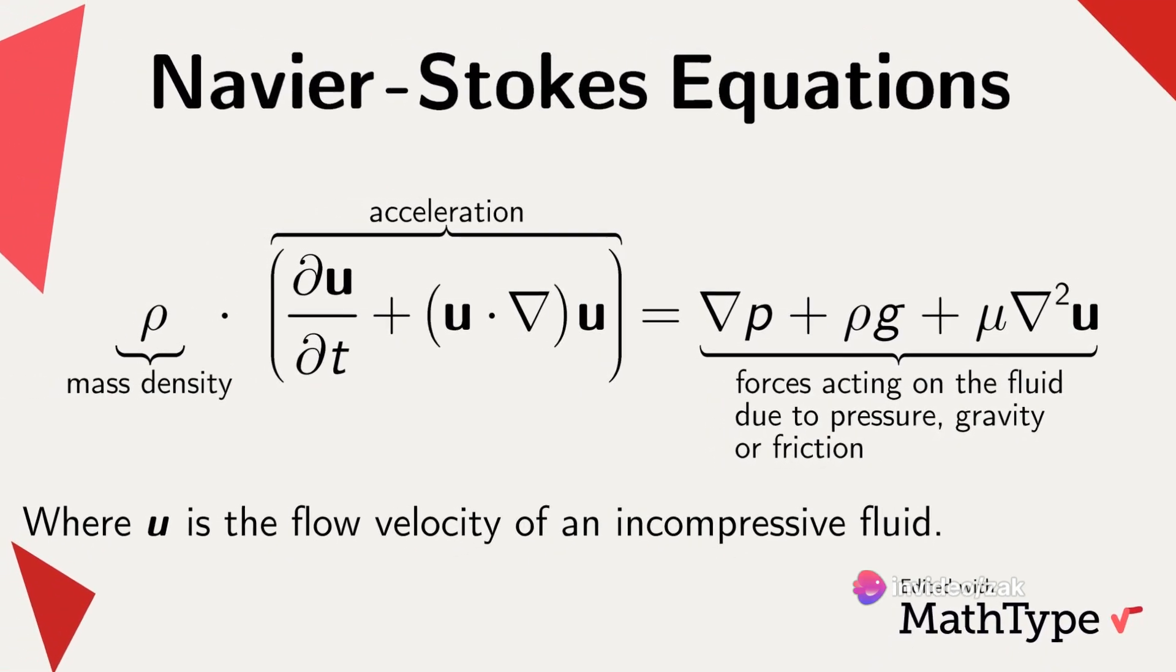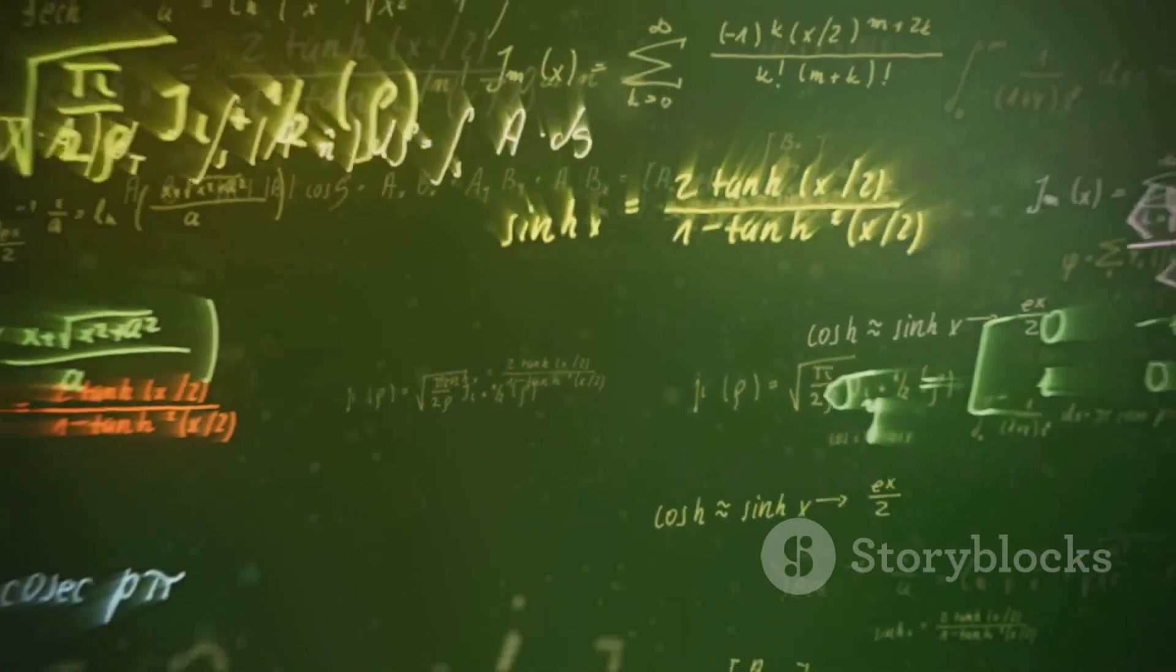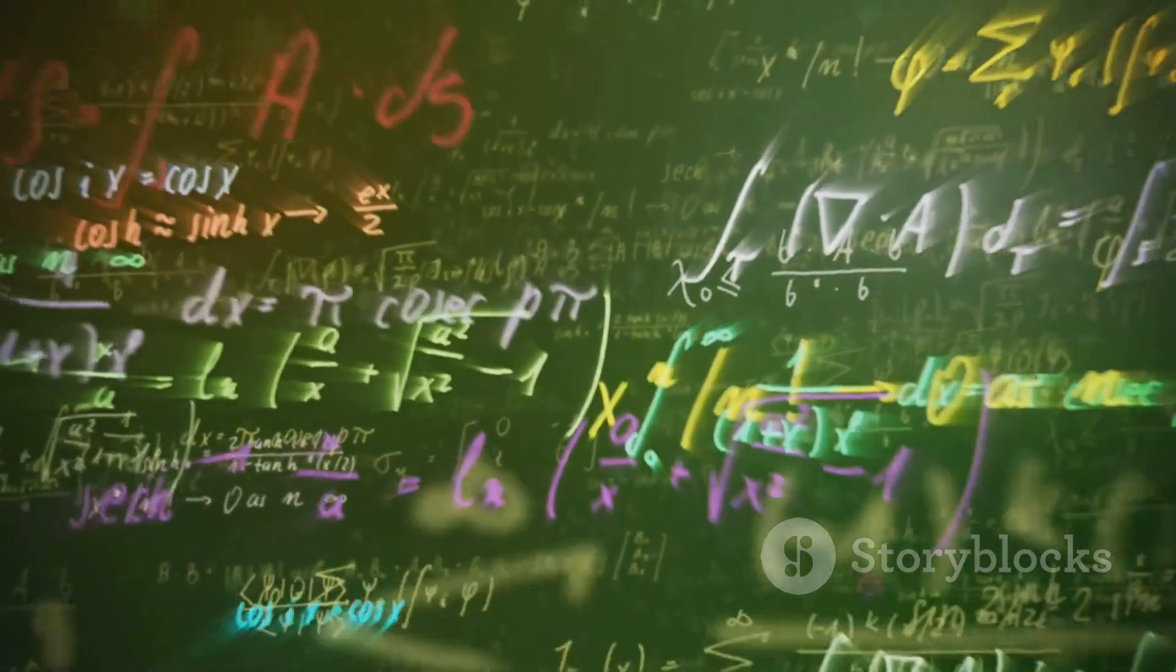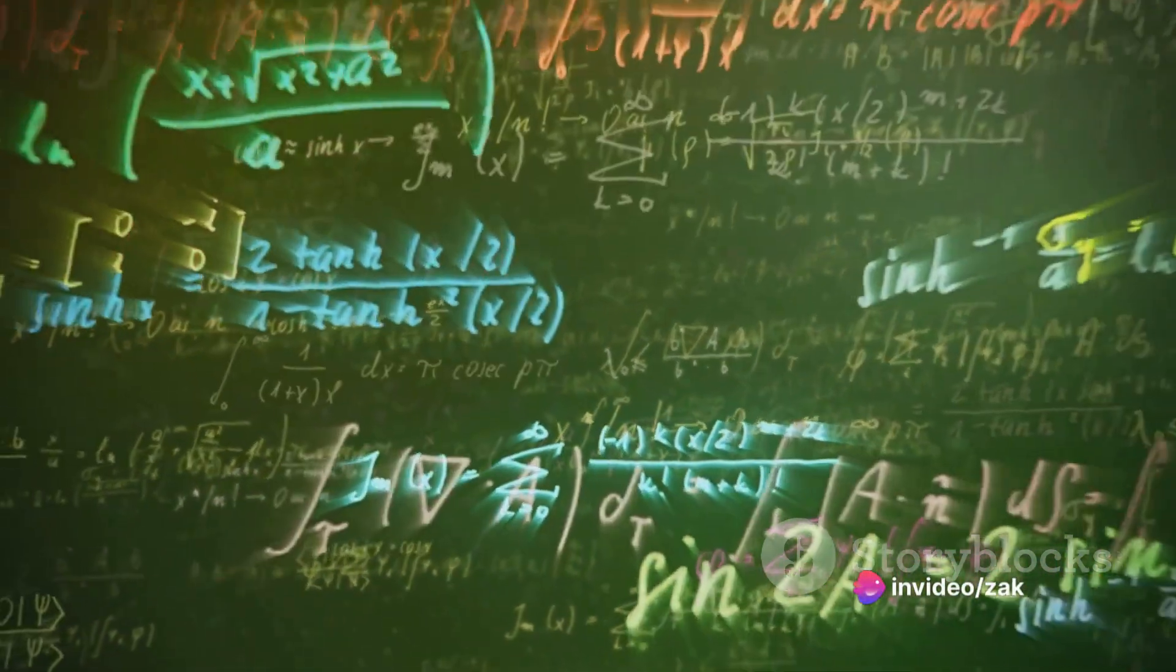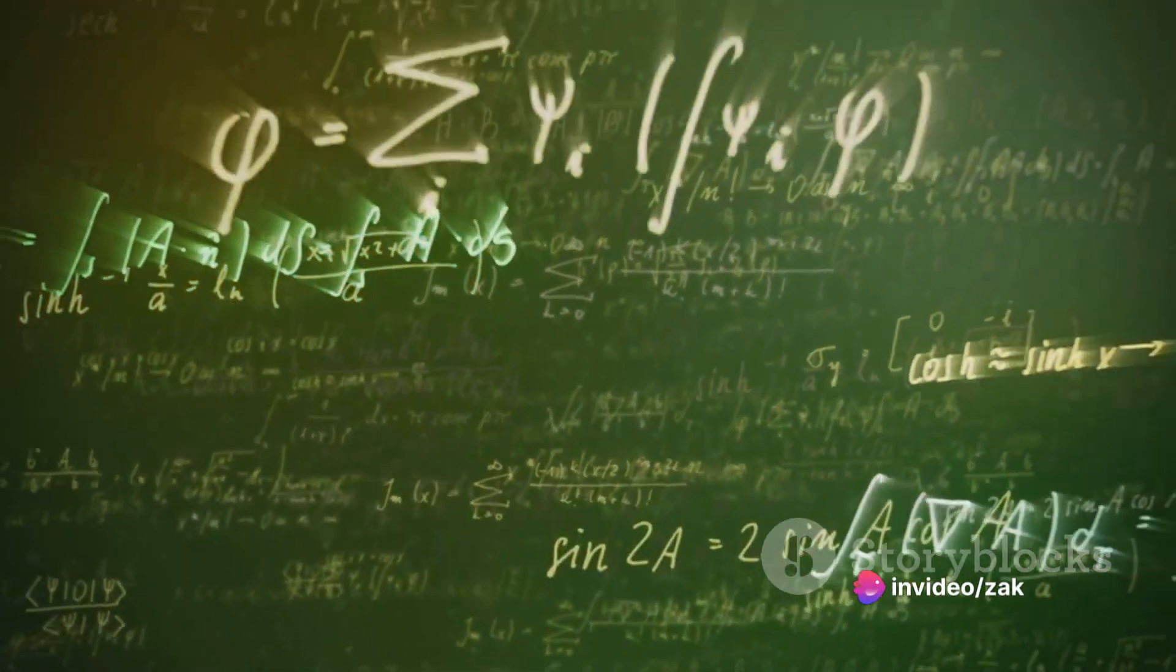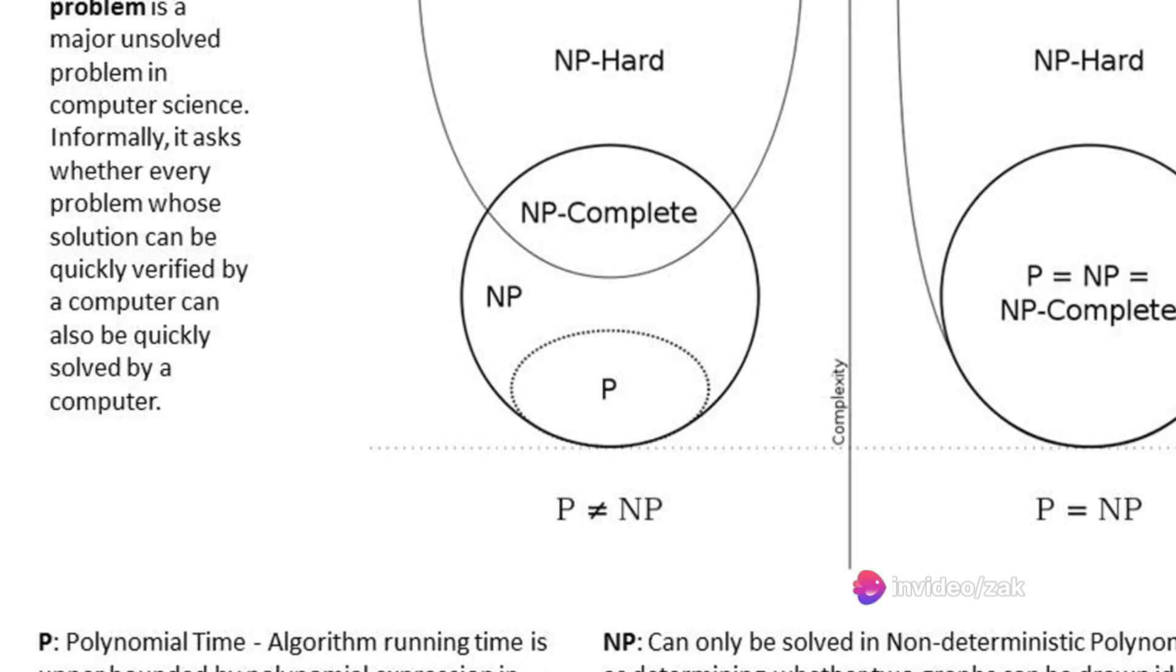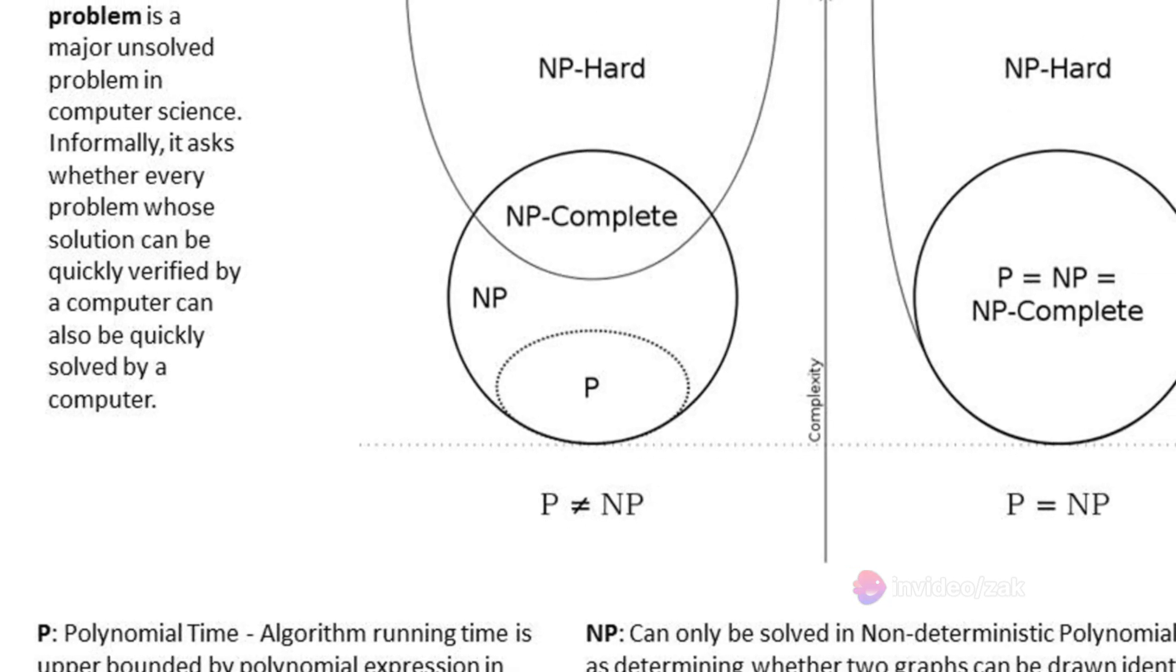The challenge lies in proving that solutions always exist and are smooth for the three-dimensional case. The P versus NP problem is one of the most famous unsolved problems in computer science. It asks whether every problem whose solution can be quickly checked by a computer can also be quickly solved by a computer.